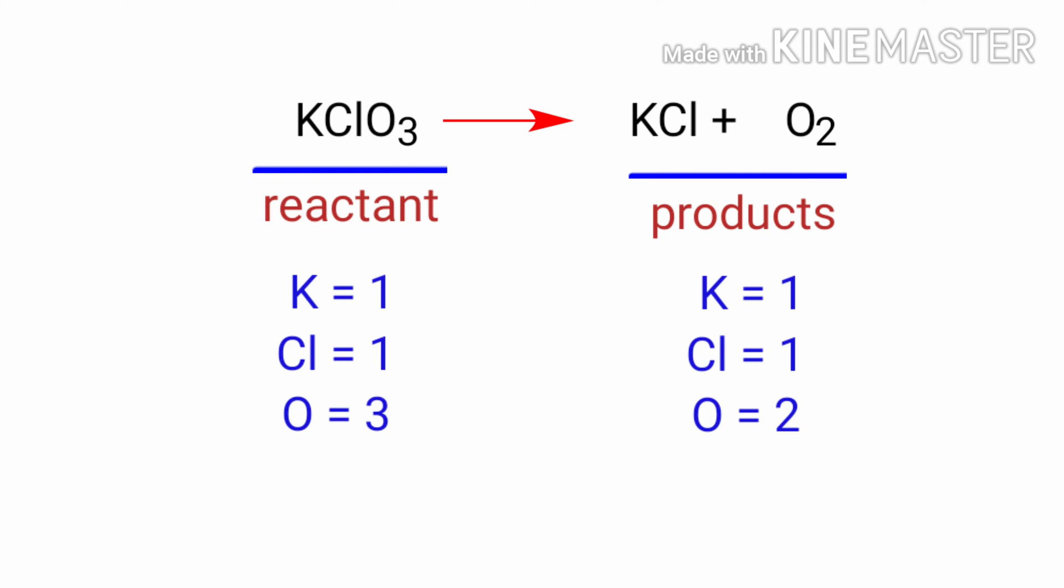To balance the chemical equation, we need to make use of coefficients. A coefficient is a number that we place in front of a chemical formula.